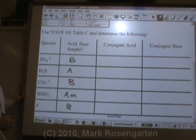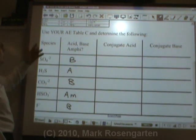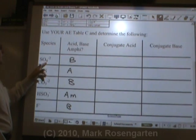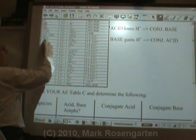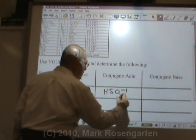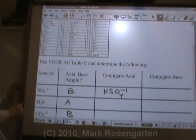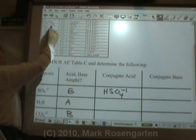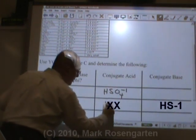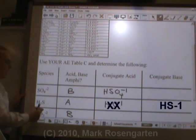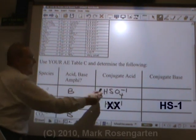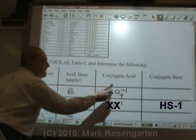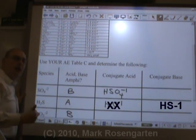To get the conjugate acid, add H+ to the formula. To get the conjugate base, subtract H+ from the formula. Or you could look at the chart. SO4²- is a base — its conjugate acid is HSO4-. H2S is an acid — its conjugate base is HS-. Notice that when losing a hydrogen, the charge also goes down by one; and when gaining a hydrogen, the charge becomes more positive by one, because it's H+ that's being lost or gained.